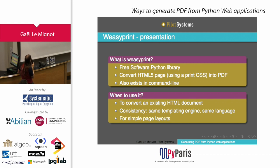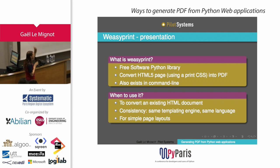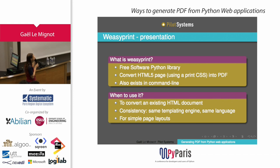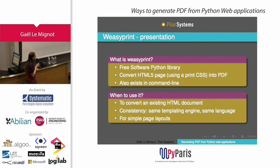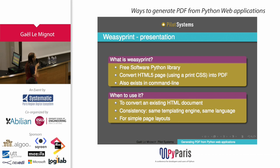When should you use it? The first case is to convert an existing HTML page — you have a website, you show a web page to the user, and you want to generate a PDF version of the same page, so you already have the HTML and can just convert it. Sometimes you will also use it when you never display the HTML version at all — you just want to generate a PDF but use the same templating and markup languages, CSS and HTML, that you are used to in your web application, without learning something else.